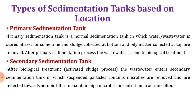Now, based on the location, the sedimentation tank is classified as a primary and secondary sedimentation tank. If the sedimentation tank is provided in the primary treatment, it is called a primary sedimentation tank. And if it is provided in the secondary treatment, then it is called a secondary sedimentation tank. Primary sedimentation tank is a normal sedimentation tank in which wastewater is stored at rest for some time. Sludge collected at the bottom and oily matter collected at the top are removed. After the primary sedimentation process, the wastewater is sent to biological treatment. So here in the primary sedimentation tank, only the suspended particles and oily matter are removed — a physical separation is carried out.